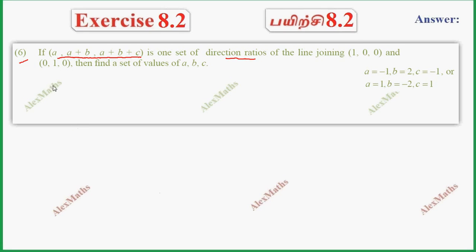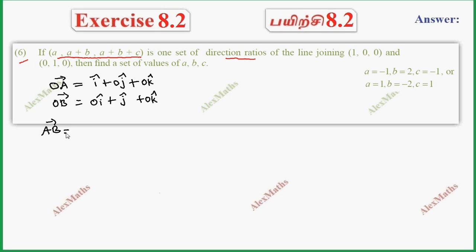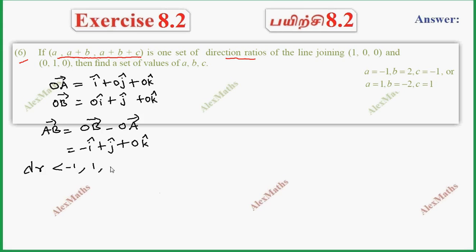So the first point is OA vector. OA vector is i plus 0j plus 0k. OB vector is 0i plus j plus 0k. AB vector equals OB vector minus OA vector, which gives minus i plus j plus 0k.